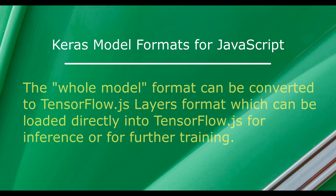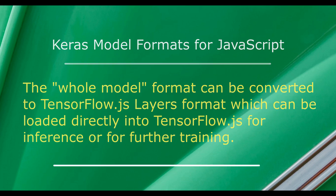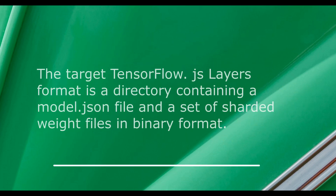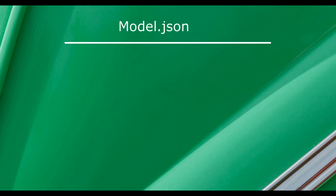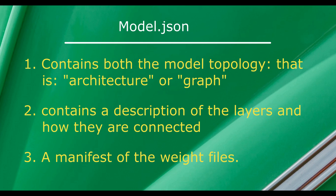Keras models, typically created via the Python API, may be saved in one of several formats. The whole model format can be converted to TensorFlow.js layers format, which can be loaded directly into TensorFlow.js for inference or for further training. The target TensorFlow.js layers format is a directory containing a model.json file and a set of sharded weight files in binary format. The model.json file contains both the model topology — that is, architecture or graph — as well as a description of the layers, how they are connected, and a manifest of the weight files.